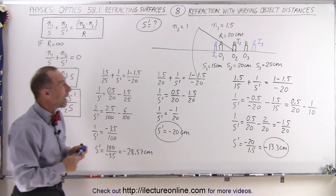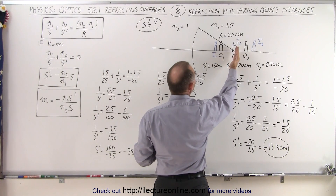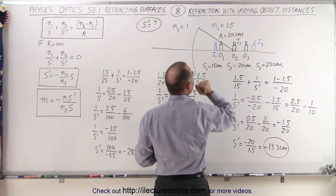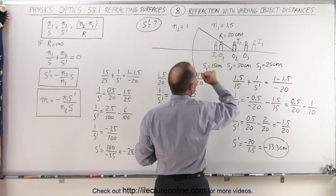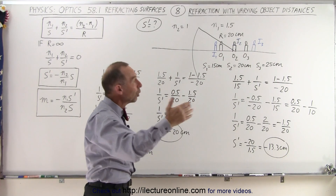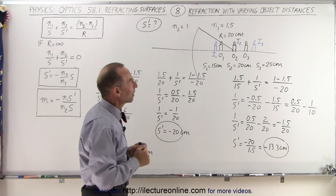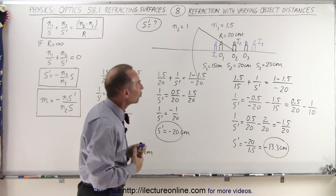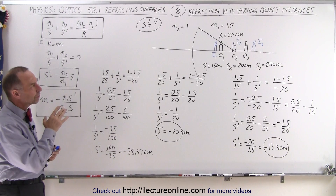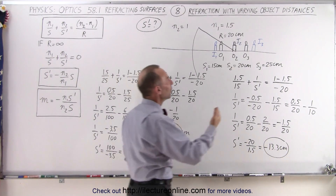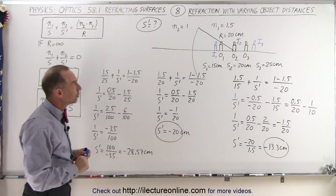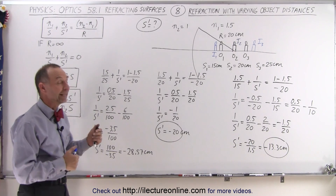We can begin to see a pattern. When the object is inside the center of curvature, the image is closer to the boundary than the object. At the center of curvature, the image is at the same location as the object. And when the object is placed farther away than the center of curvature, the image is even farther from the boundary. This gives us a good understanding of refracting surfaces. Next, we should try putting objects even further away to see what happens in the limit as the object goes to infinity — stay tuned for our next video.